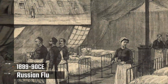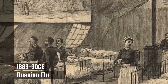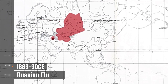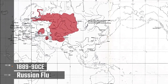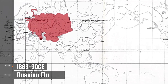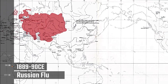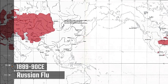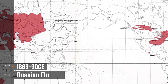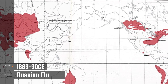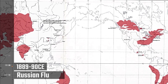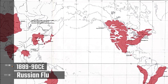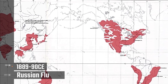Russian Flu, 1889 to 1890. The 1889–1890 flu pandemic was a deadly influenza pandemic that killed about one million people worldwide. The outbreak was dubbed the Asiatic Flu or Russian Flu. The virus strain was initially believed to be influenza A subtype H2N2 of avian origin, but more recently the strain was asserted to be influenza A virus subtype H3N8.